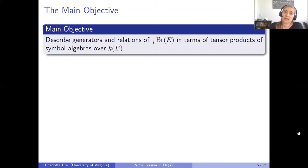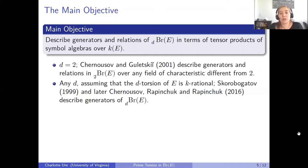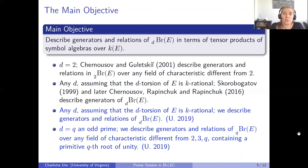Fortunately, some work was already done when I started. Jahnel and Schütt in 2001 described generators and relations of the 2-torsion of the Brauer group of E over any base field of characteristic different from 2. For higher torsion, under the assumption that the d-torsion of the elliptic curve is k-rational, Skorobogatov and later Jahnel, Reprintsev, and Reprintsev described generators of the d-torsion. My work added a description of the relations under that same assumption.